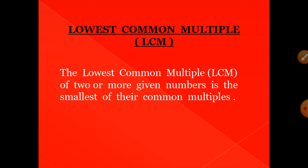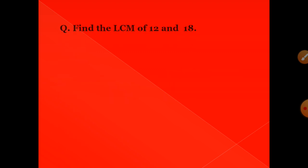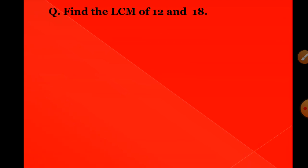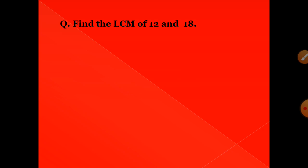Let's see some examples of how to find the LCM. Our first question is: find the LCM of 12 and 18. I am taking two numbers, 12 and 18. There are two methods to find the LCM — I will tell you both methods. In the first method, what you have to do is find the prime factorization of 12 and the prime factorization of 18.